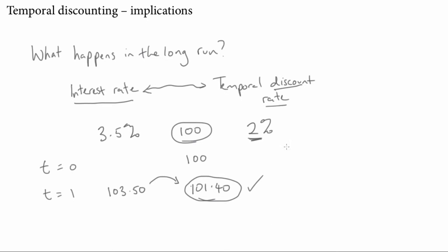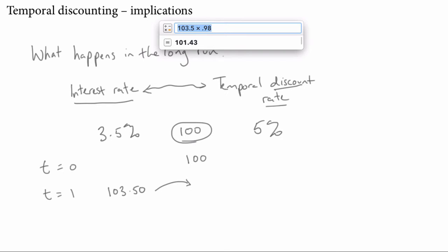What about if you're a person who's impatient, who has a high discount rate? Well, then it's quite different. Let's say their discount rate is 5%. The money still goes up by $3.50 because the bank's interest rate hasn't changed, but now you've got to discount that to find out the personal value by 5%. So we get $103.50 times 0.95, and the answer is 98.33.